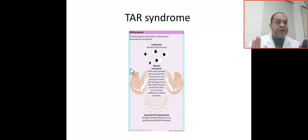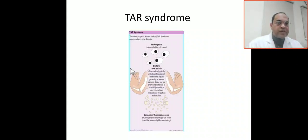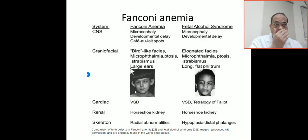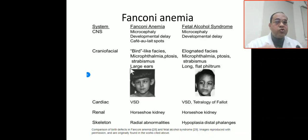TAR syndrome is called thrombocytopenia with absent radius. In our case, the thumb and radius are both present, so this is not TAR syndrome. TAR syndrome is also associated with a bleeding disorder due to thrombocytopenia and megakaryocyte abnormalities.